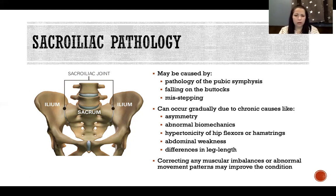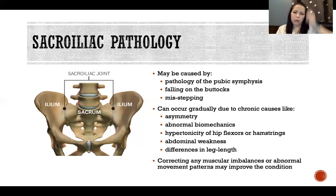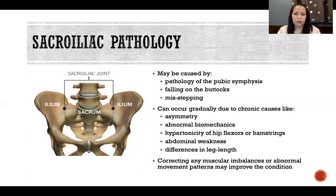Sacroiliac pathology can also develop gradually through chronic causes such as asymmetry of movement, muscle force, or bone shape; abnormal movement patterns; hypertonicity of hip flexors or hamstrings; abdominal weakness; and differences in leg length. When one leg is shorter, the sacroiliac joint bears the brunt of that asymmetry — placing a lift in the shoe of the shorter leg can equalize leg length and reduce pressure on the sacroiliac joint. Correcting muscular imbalances or abnormal movement patterns may improve the condition, depending on cause and severity.